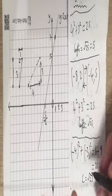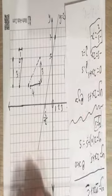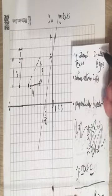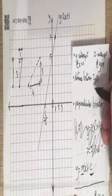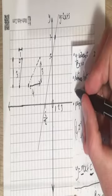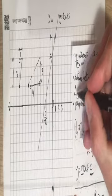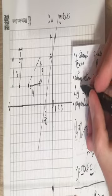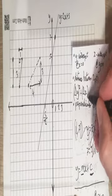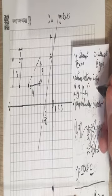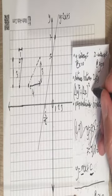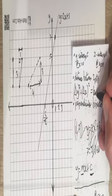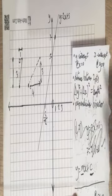Quick recap: y-intercept — put in x equals 0. X-intercept — put in y equals 0. Distance between two points: find the change in the y-coordinates, find the change in the x-coordinates, square each (don't forget the brackets), add them, then square root your answer to get the length.